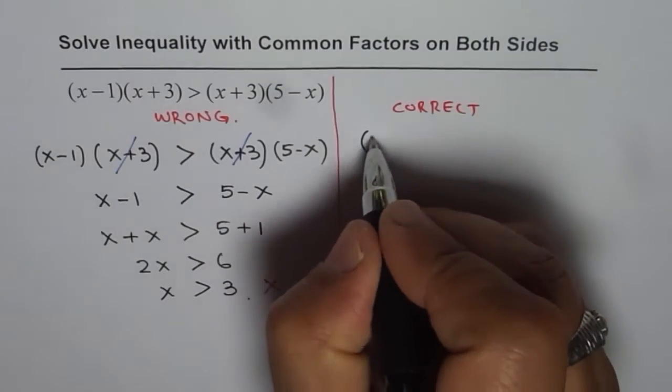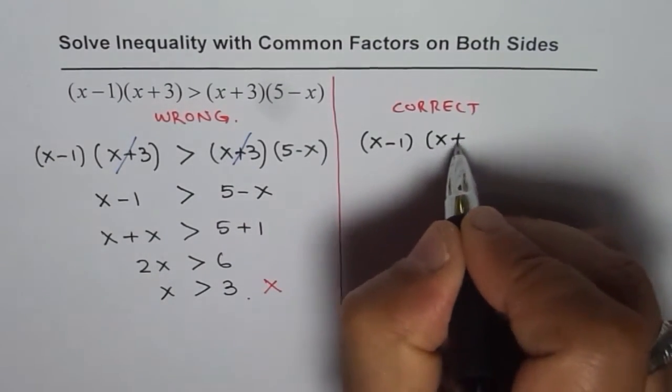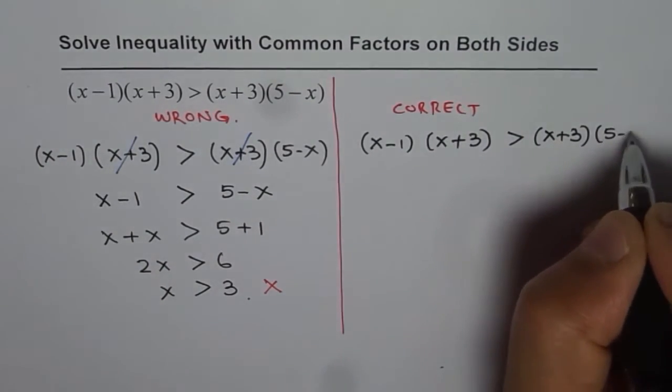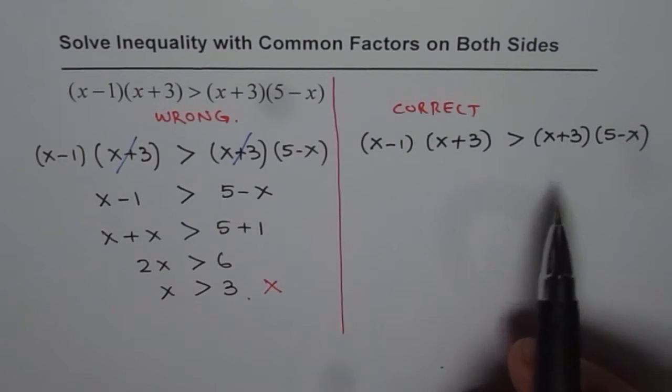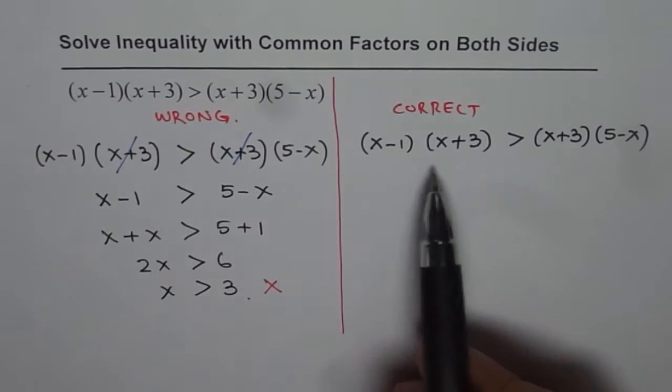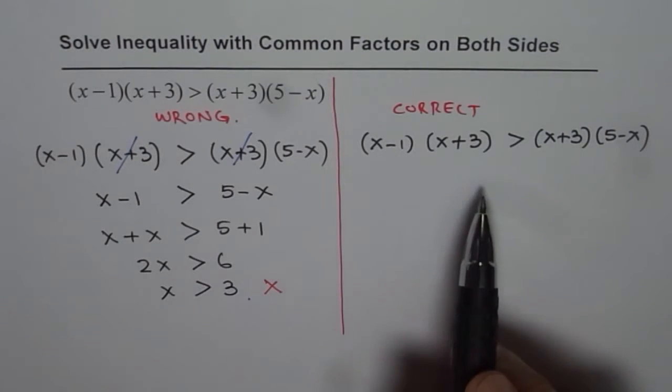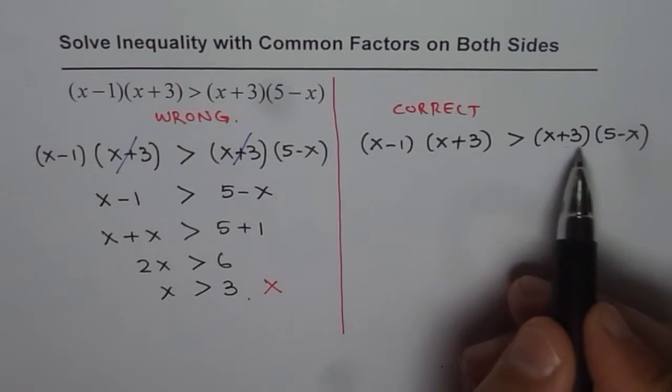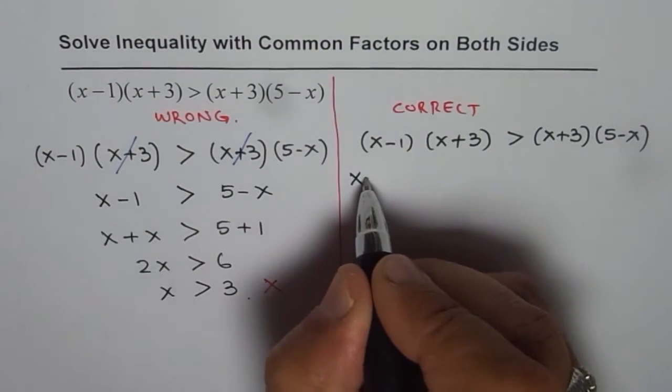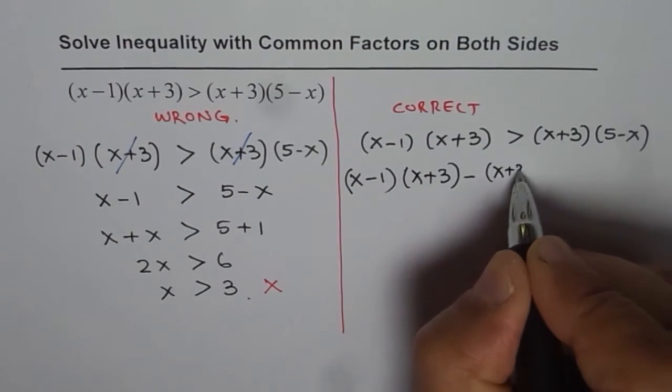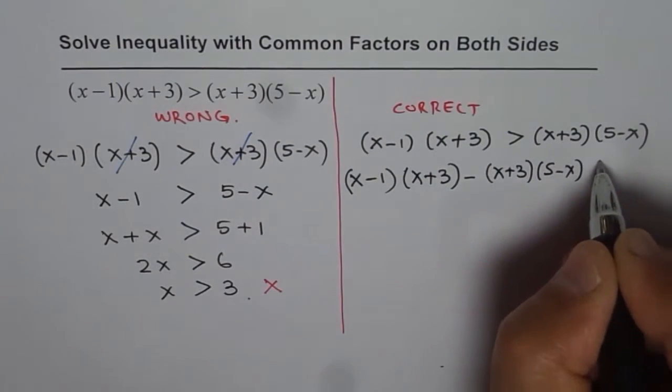Let's redo it. Start with (x-1)(x+3) > (x+3)(5-x). Two ways to do this: you could expand both sides, bring terms together, and simplify - that's the first way which I'm leaving for you to try. The second way I call the more efficient way. I will bring these terms to the left. We have (x-1)(x+3) - (x+3)(5-x) > 0.